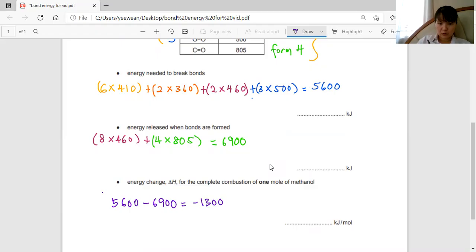But this is for two moles of methanol. So if I want one mole of methanol, divide by two. I'm going to get exothermic 650. That would be my answer.